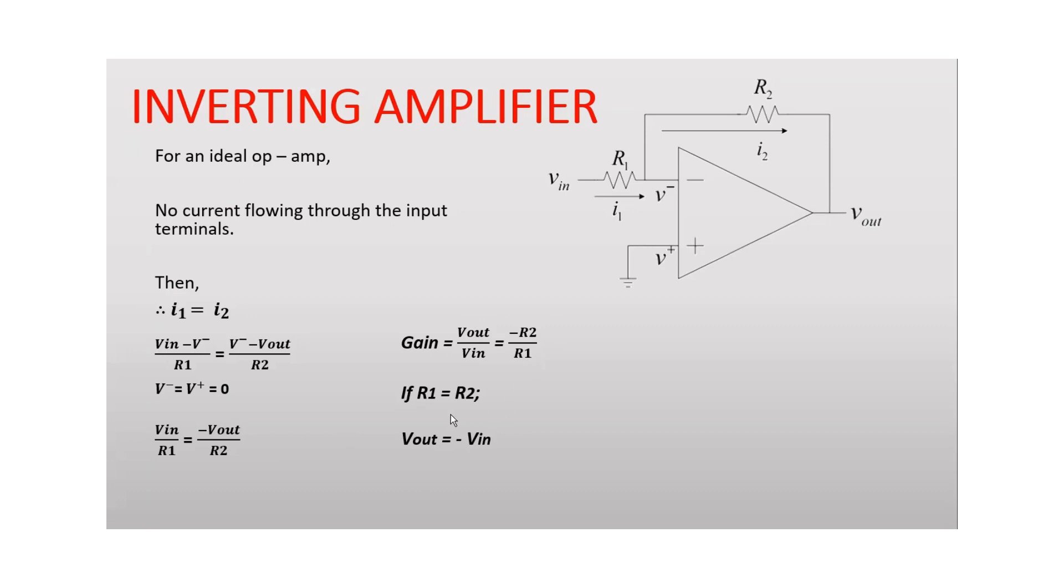If we consider R1 is equal to R2, then we can say that Vout is equal to minus Vin. That is what we call this amplifier - the inverting amplifier.